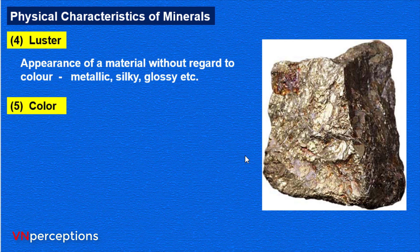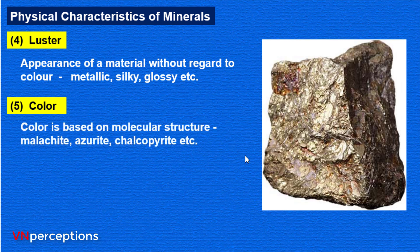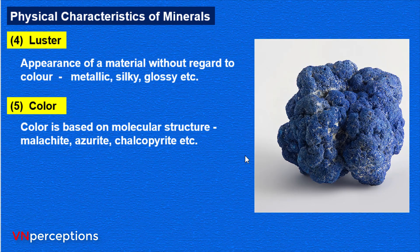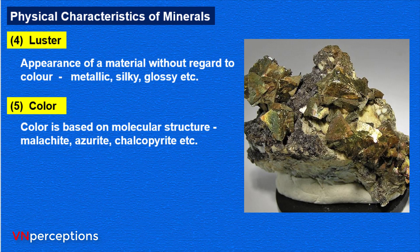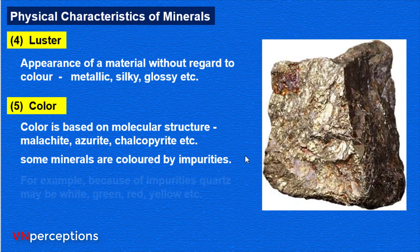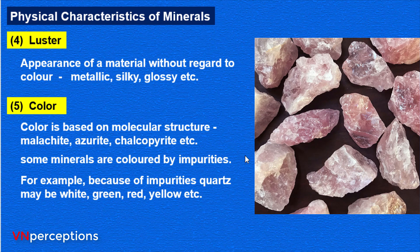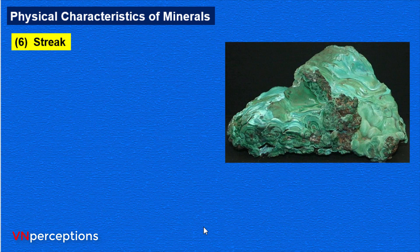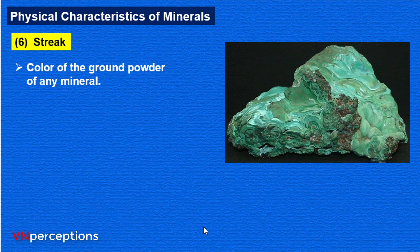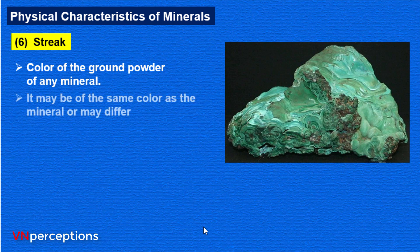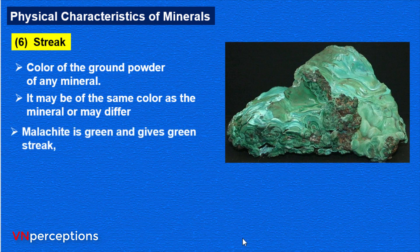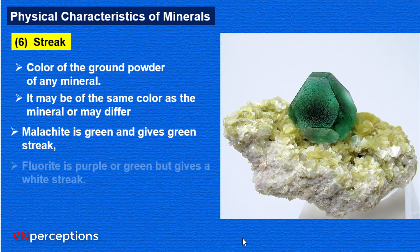Next comes color. Color is based on the molecular structure — for example, malachite, azurite, and chalcopyrite have characteristic colors. Some minerals are colored by impurities; for example, because of impurities, quartz may be white, green, red or yellow in color. Streak refers to the color of the ground powder — that is, if you powder a particular mineral, the resulting color is its streak. It may be the same color as the mineral or different. Malachite is green and gives a green streak, but fluorite, which is purple or green, gives a white streak.